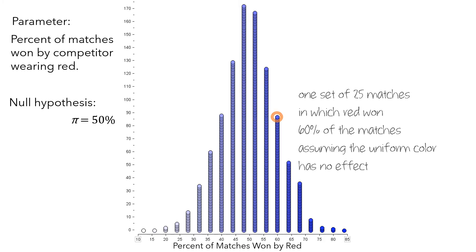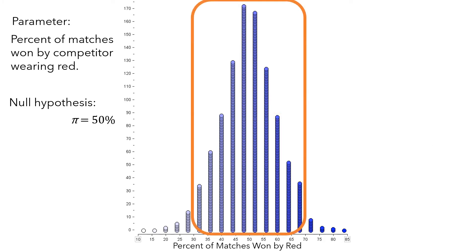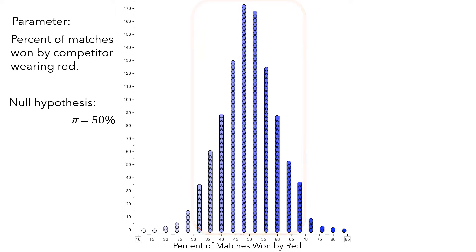In most of these 25-match sets, the competitor wearing red wins between 33 and 67% of the matches. But occasionally, even when the uniform color has no effect, the competitor wearing red wins a really large percentage of the matches, or a really small percentage, just due to sampling variation.